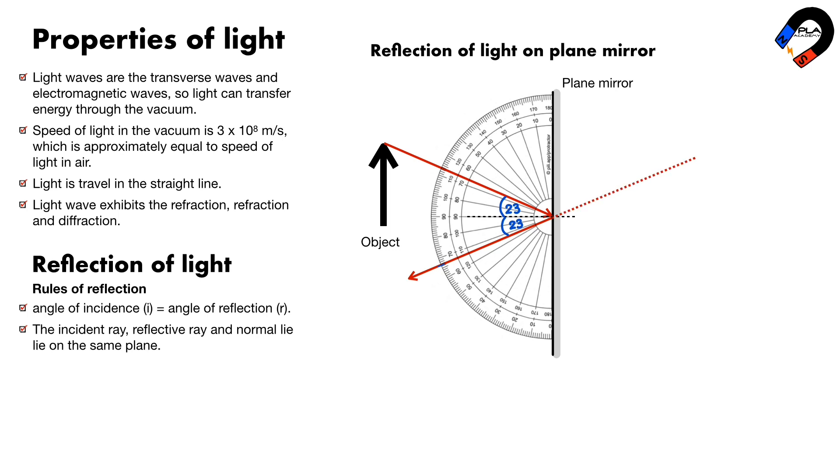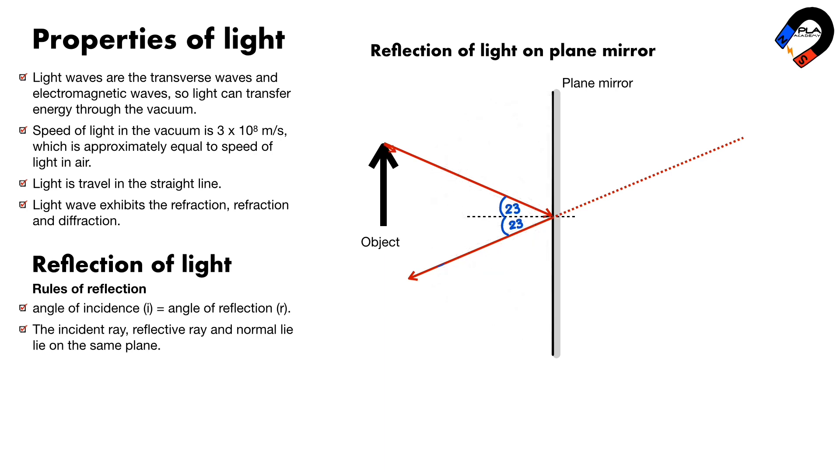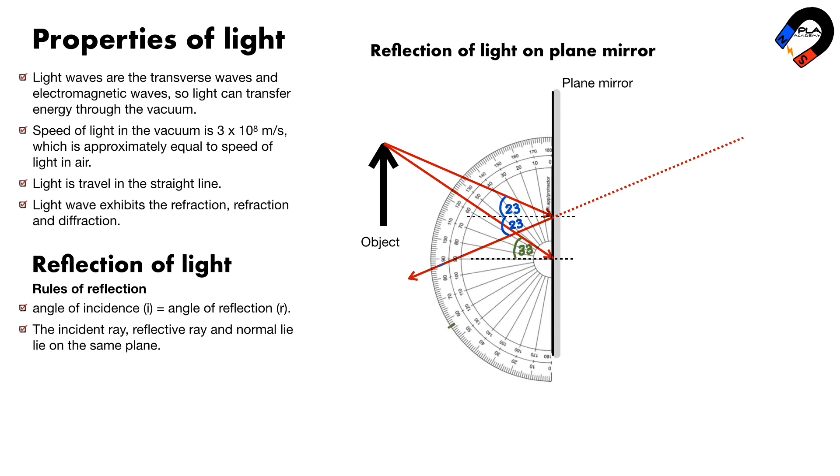Extend the reflective ray back behind the plane mirror as a dotted line; this shows it is a virtual ray. Draw the second incident ray from the top of the object to anywhere on the plane mirror. Repeat the steps from the normal line and reflective ray for the second incident ray.